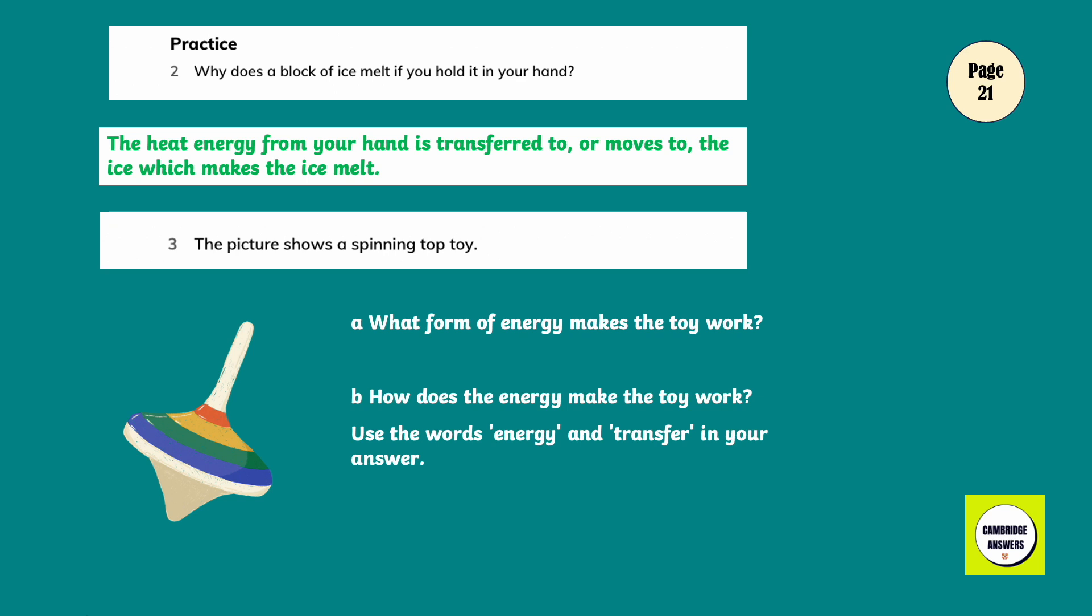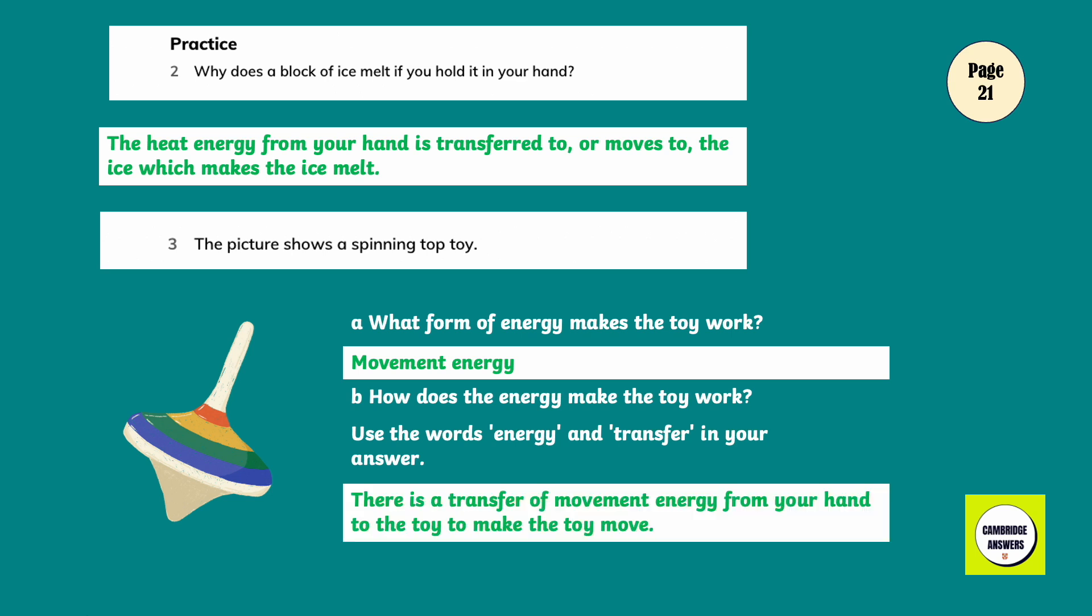The picture shows a spinning top toy. What form of energy makes the toy work? Movement energy. How does the energy make the toy work? Use the words energy and transfer in your answer. There is a transfer of movement energy from your hand to the toy to make the toy move.